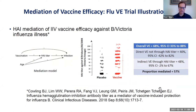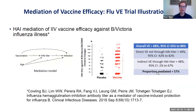Formal mediation analysis has not been used much for correlates assessment in vaccine studies, but recently Chechen has been doing this for flu vaccines. In a paper he wrote with colleagues, the proportion of vaccine VE mediated by the HAI titer was estimated to be 57%. I think this is now going to be a normative part of the toolkit for assessing correlates, and we are doing this in the COVID statistical analysis plan.